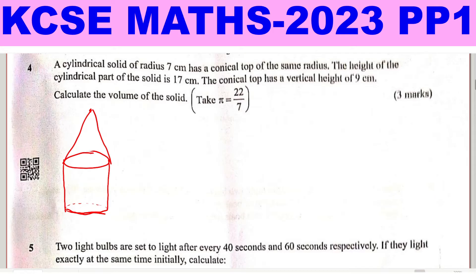And you're given that the radius of this cylinder is 7, so this is 7 centimeters. And the height of the cylindrical part is 17 centimeters, so that height is 17. The conical top has a vertical height of 9, so this height here is 9.